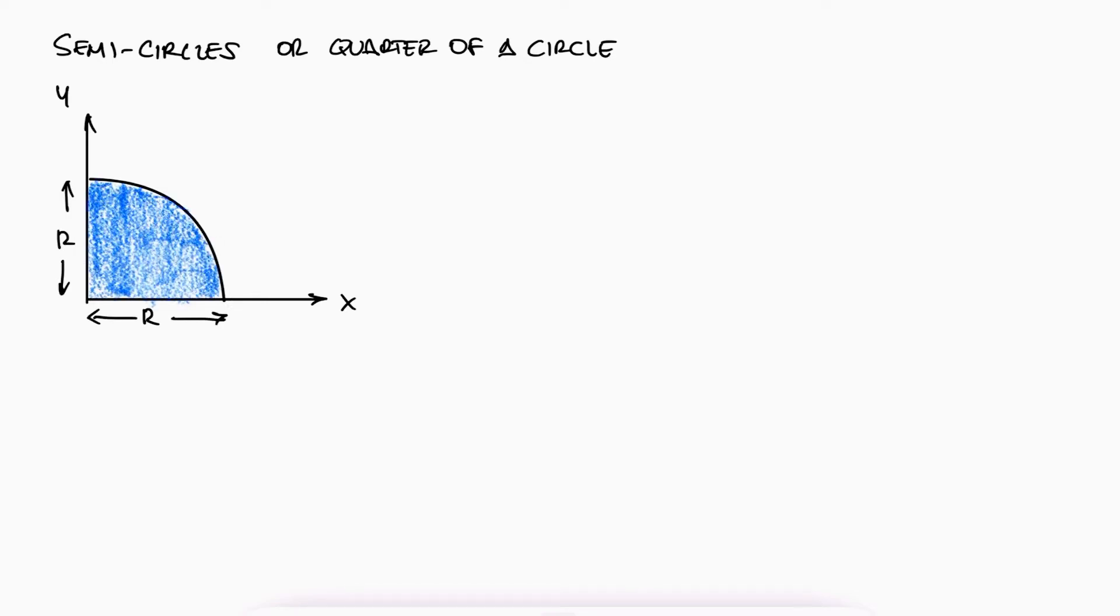All we are missing now is the centroid of a semicircle, or what in practice is the same, a quarter of a circle. Using the circle equation, we see that for a quarter circle, y is the square root of r squared minus x squared. The centroid of a rectangle at a distance x would be x, and the dA term would be equal to dx times y.